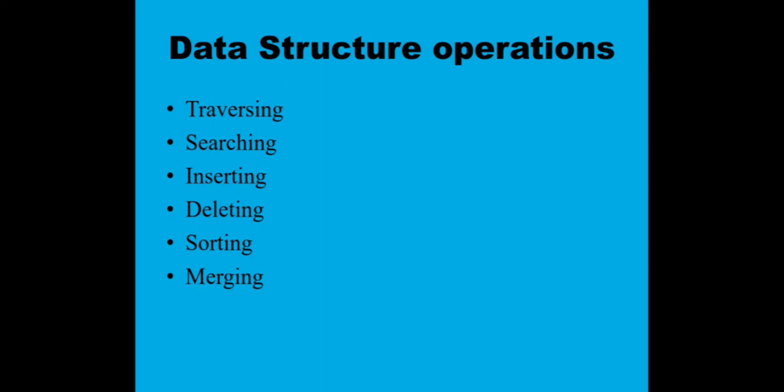The next one is deleting. Deleting means removing a record from the structure. Suppose you don't require a particular record for any other processes and you want to remove it from memory. That process on the data is known as deleting.